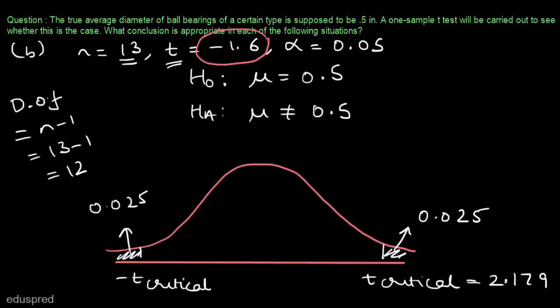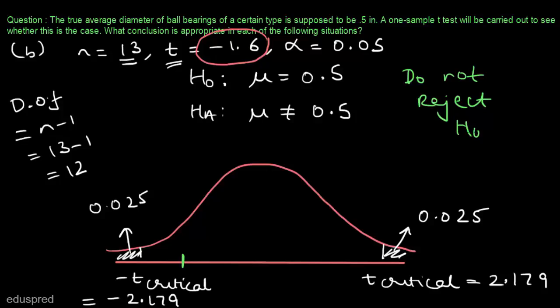We are given that t is equal to minus 1.6, so minus 1.6 will lie somewhere between minus t-critical and zero. That means we will not reject the null hypothesis, as minus 1.6 does not lie in the rejection region. Even in this case, the conclusion is: do not reject the null hypothesis at the 5% significance level.